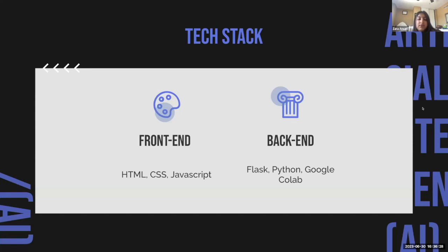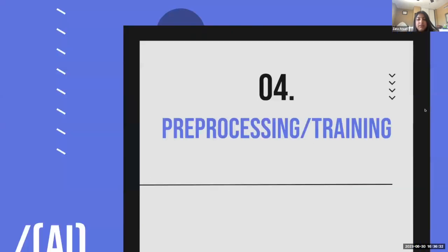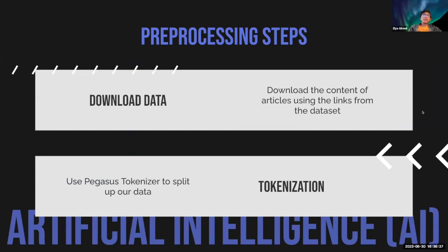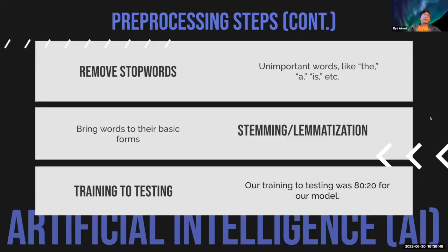Pre-processing will be covered by Zia. For downloading data, we used the dataset from Kaggle and downloaded the content of the articles from the links. We used the Pegasus tokenizer to split up our data for the AI. We also removed stop words like 'the,' 'a,' and 'is' so the AI could better understand the content. We used stemming and lemmatization to bring words to their basic forms, and our training-to-testing ratio is 80 to 20.